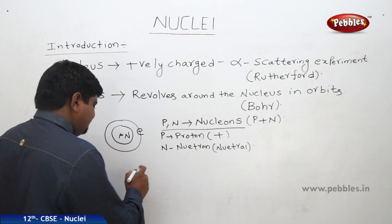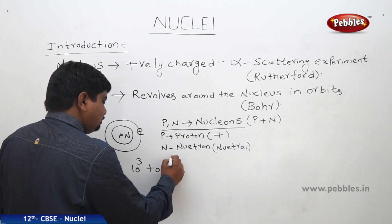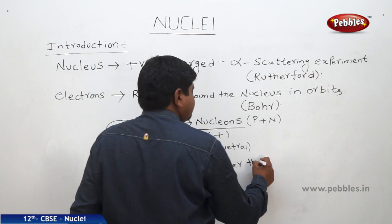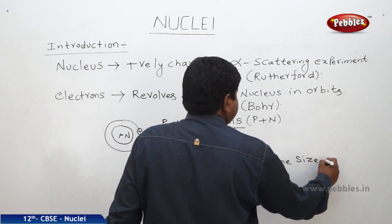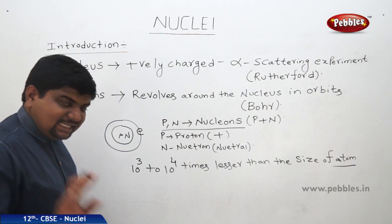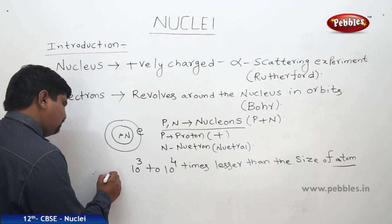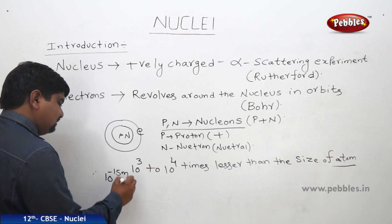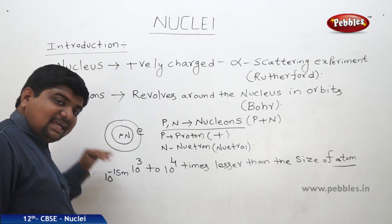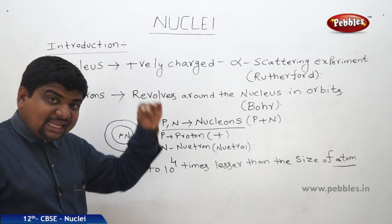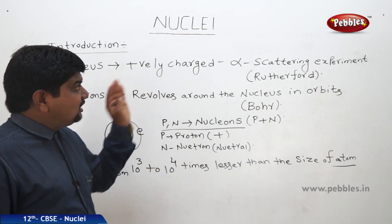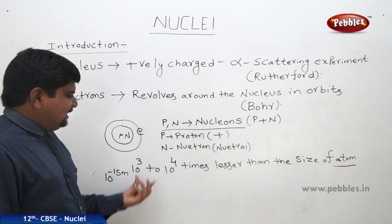The nucleus of an atom is 10³ to 10⁴ times smaller than the size of the atom. So if the atom's size is on the order of 10⁻¹⁰ meters, then the nucleus would be approximately 10⁻¹⁴ to 10⁻¹⁵ meters. We will find out the precise size of the nucleus in a detailed analysis. In terms of size comparison, the nucleus is extremely small.